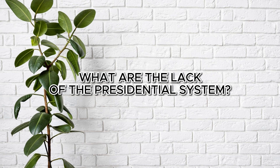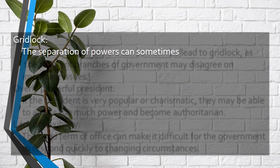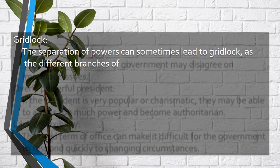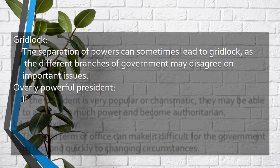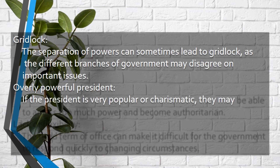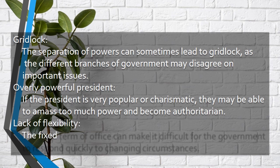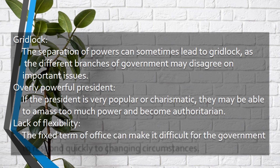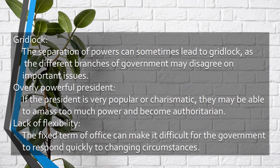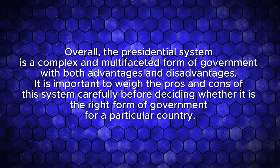Here are some of the disadvantages of a presidential system. Gridlock: the separation of powers can sometimes lead to gridlock, as different branches of government may disagree on important issues. Overly powerful president: if the president is very popular or charismatic, they may amass too much power and become authoritarian. Lack of flexibility: the fixed term of office can make it difficult for the government to respond quickly to changing circumstances.